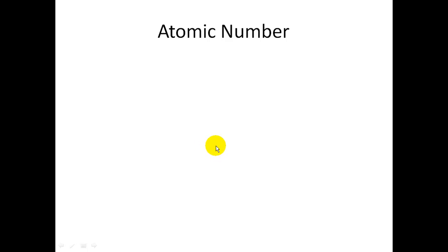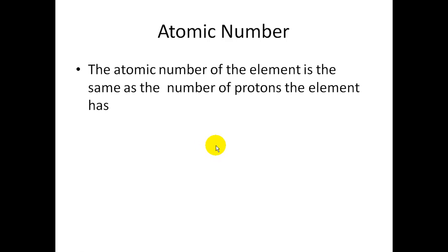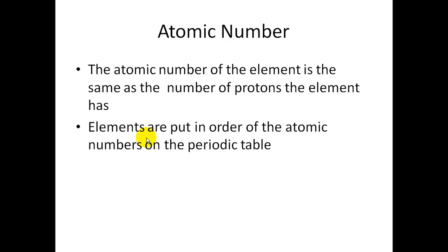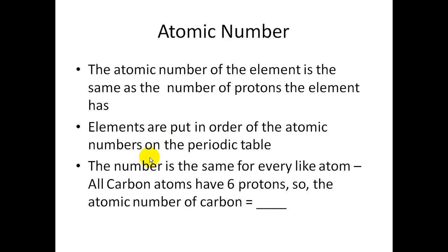A term you need to know is atomic number. The atomic number of the element is equal to the number of protons that the element has. Elements, if you look on the periodic table, are numbered one through so many, and that number also corresponds to the number of protons or atomic number. The number is the same for every like atom. So, all carbon atoms have six protons, so the atomic number of carbon is six.